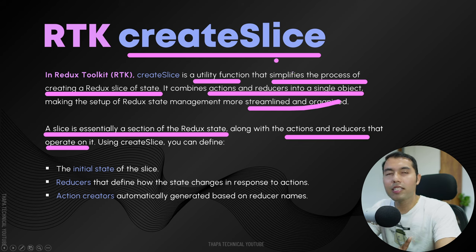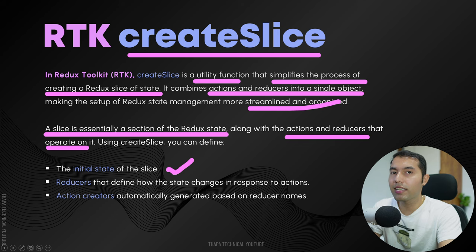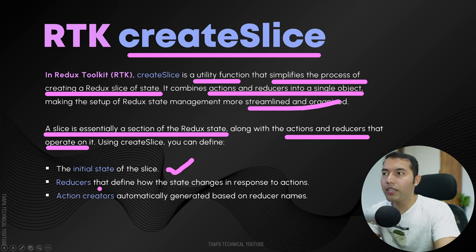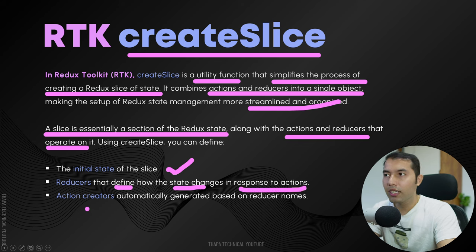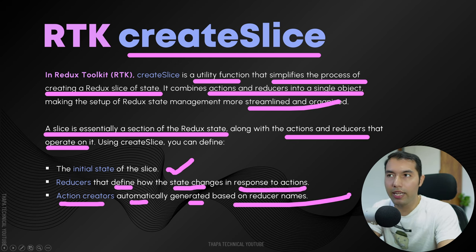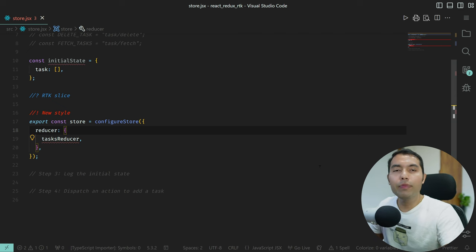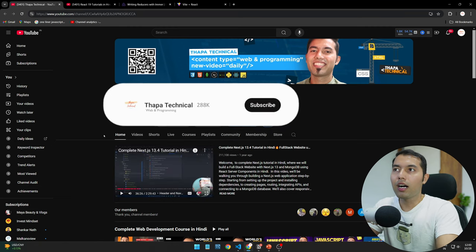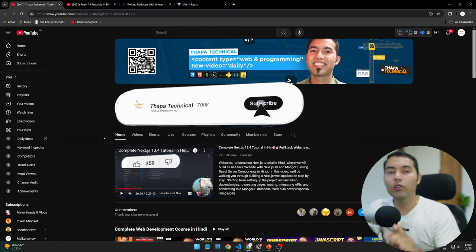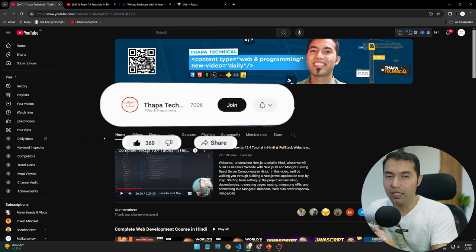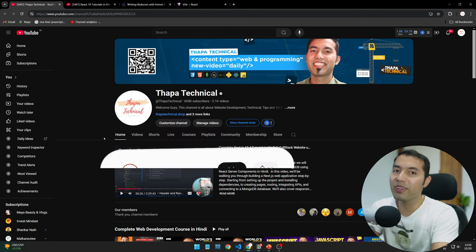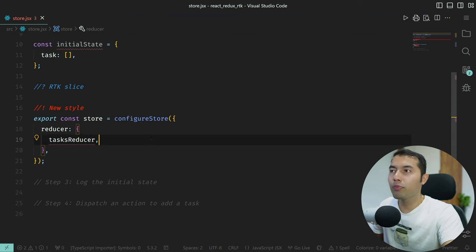When using the createSlice function, inside we have the initial state, then we have reducers that define how the state changes in response to actions, and then action creators are automatically generated based on the reducer names. I believe you will enjoy this — but before that, if you haven't subscribed to this channel, please don't miss such awesome videos.